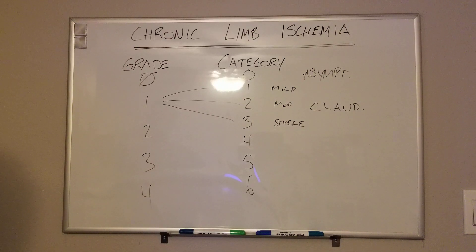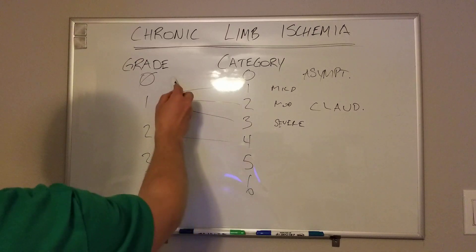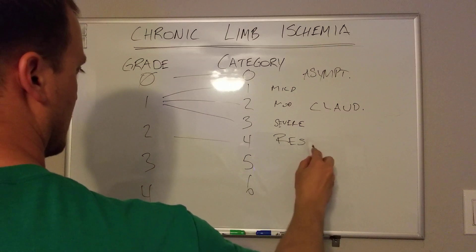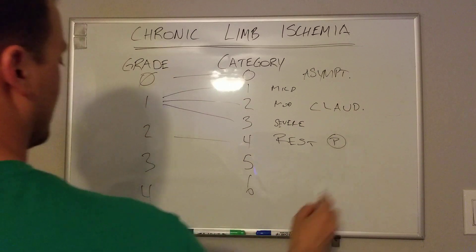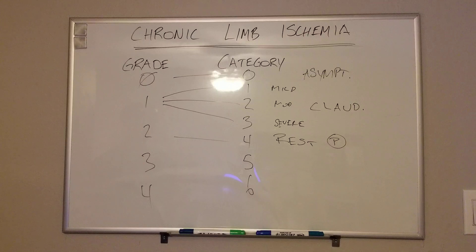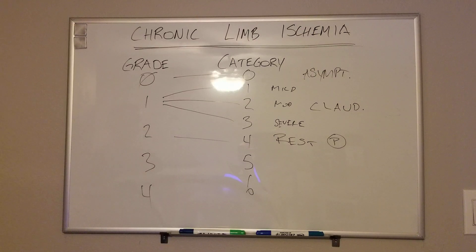Grade two corresponds to category four, and this is where we get into rest pain. Ischemic rest pain is classically pain across the dorsum or arch of the foot when elevated. So when I go to bed at night, my foot aches, but when I hang my foot over the side of the bed, the pain goes away. That's rest pain — your blood flow isn't sufficient with elevation because of such severe chronic peripheral arterial disease.